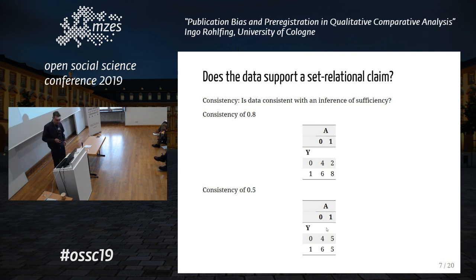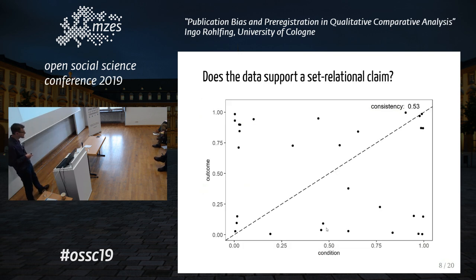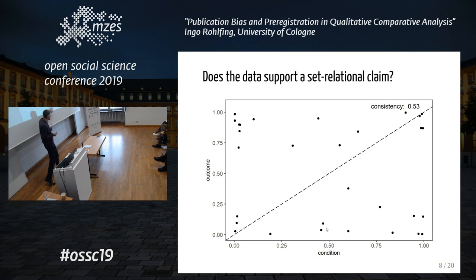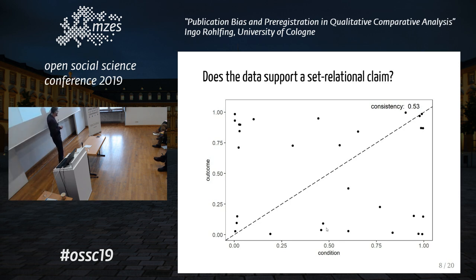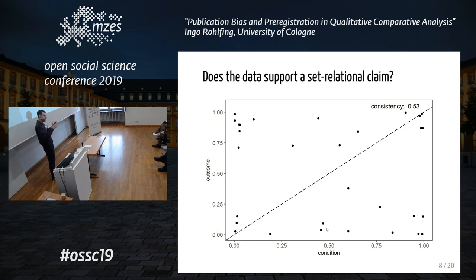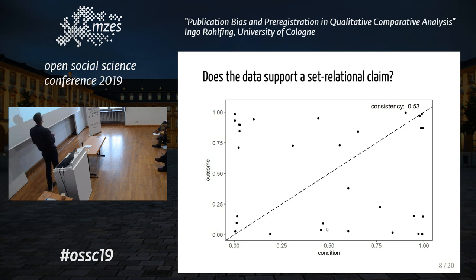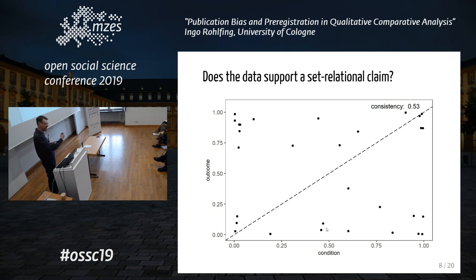When you have fuzzy sets, the idea is the same. You plot a fuzzy condition against a fuzzy outcome — say age against income. Cases are scattered across the plot, and you compute a consistency value. Here the consistency is 0.53, so we would say being old is not sufficient for having a high income.